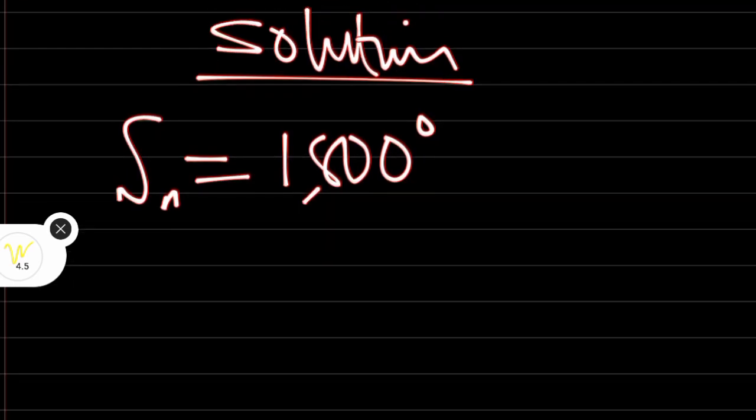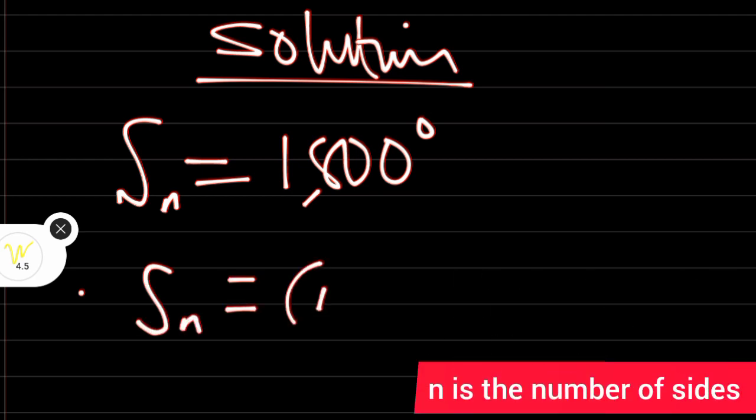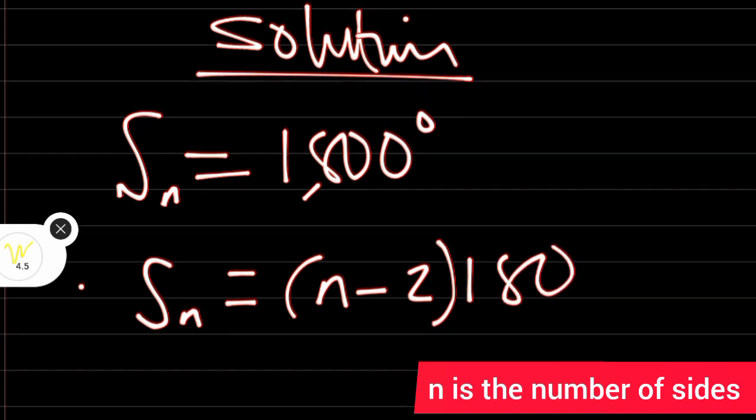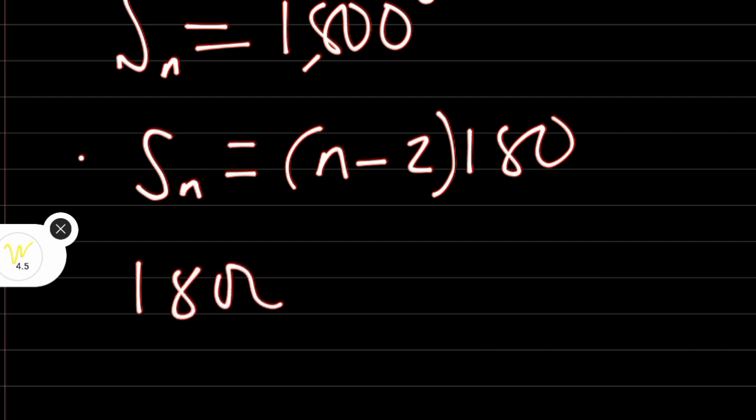According to the question, the sum of the interior angles of this polygon is 1,800 degrees. The formula for calculating the sum of angles in an n-sided polygon is given by (n-2) times 180. Therefore we have to calculate the number of sides of this polygon. It means 1,800 equals (n-2) times 180.